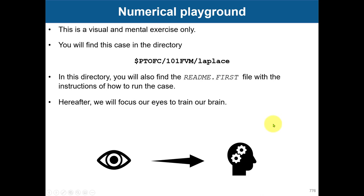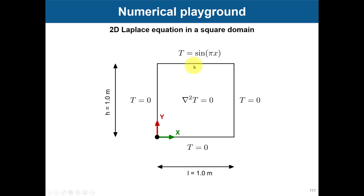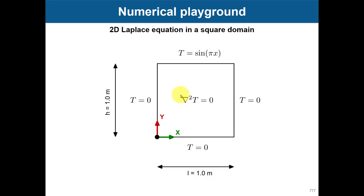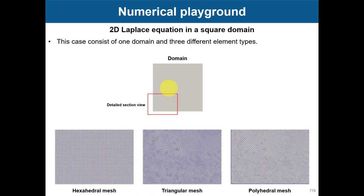You have this case located in this directory, and what we're going to do is solve this domain. This is a square domain - it's quite easy. This is the equation that we're solving with these boundary conditions, including a boundary condition at the top. With these boundary conditions and initial conditions, this problem has an analytical solution. So we're going to compare numerical and analytical solutions and get an idea of the influence of different discretization schemes.